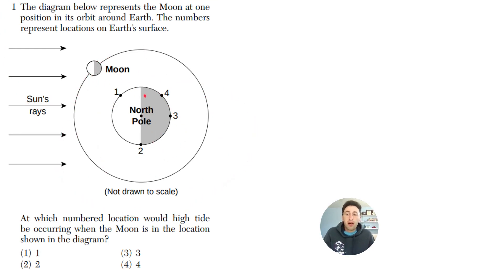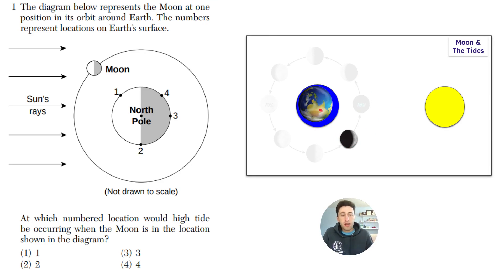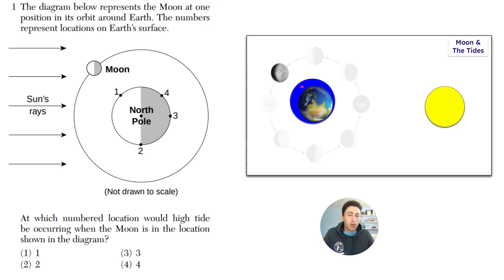As the moon orbits, the hydrosphere — the oceans of Earth — gets drawn to the moon by gravity, and also to the sun as well. So whatever position the moon is in, that's where the tides occur, which is when the water level rises. The water will rise in the position where the moon is. If the moon is over here, the high tides will be at this location on Earth. The low tides will be in the back.